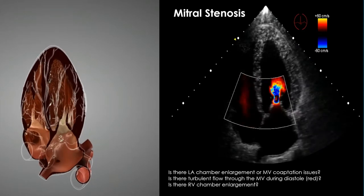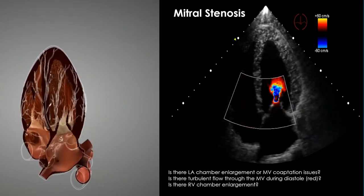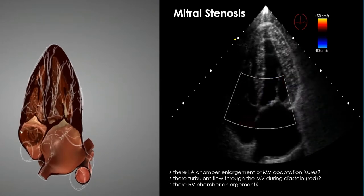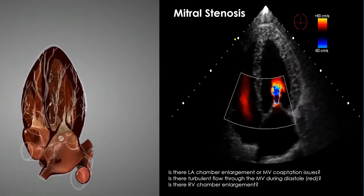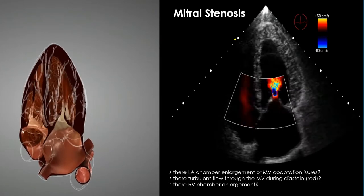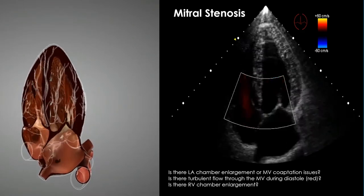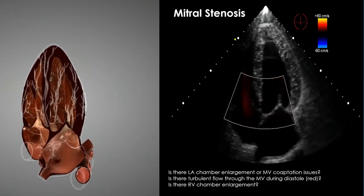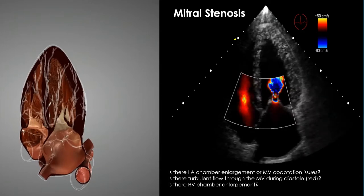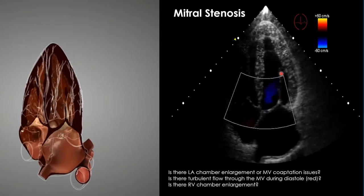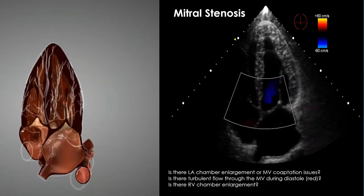Mitral stenosis is a tough assessment — it shares some features with air embolus, such as RV dysfunction. There's not much MS in our society now that rheumatic fever has largely been eliminated, but many patients have had mitral valve repair or replacement. Tissue valves degrade over seven to eight years and typically present with stenosis. On the apical four-chamber you see a thickened mitral valve with a turbulent, high-velocity jet through it during diastole.